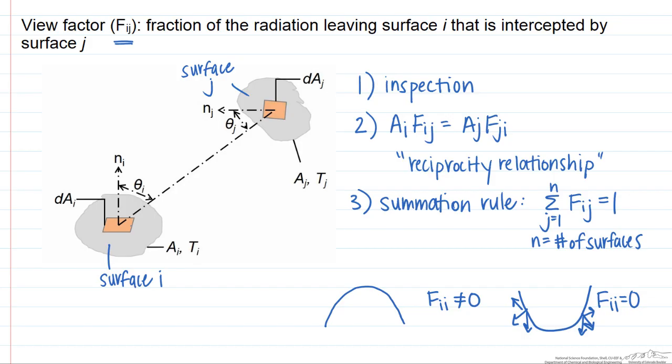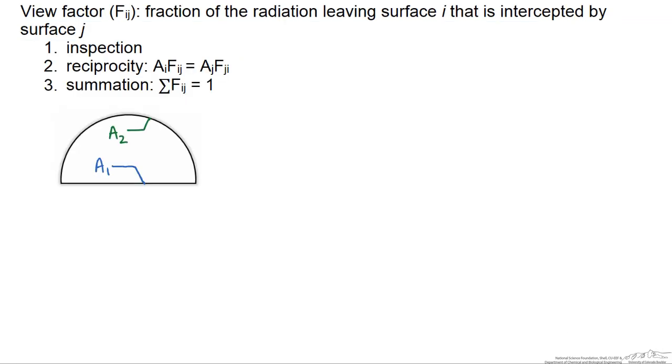First let's look at a hemispherical duct. Our surfaces are inside the duct, and we'll call the floor right here area one, and we'll call this curved surface area two.